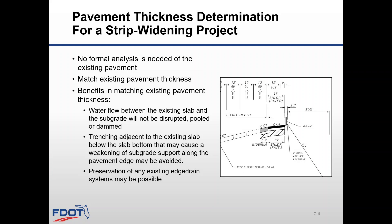Pavement thickness determination for a strip widening project: there is no formal analysis needed of the existing pavement — just match the existing pavement thickness. The benefits of matching existing pavement thickness are that water flow between the existing slabs and the subgrade will not be disrupted. Pooling or damming and trenching adjacent to the existing slab below the slab bottom may cause a weakening of subgrade support along the pavement edge, and that may be avoided. Also, preservation of any existing edge drain systems may be possible.